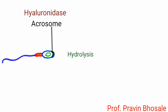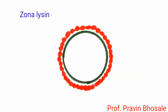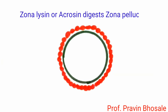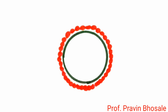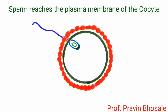Hyaluronidase enzyme of the acrosome hydrolyses the hyaluronic acid of the follicular cells. Zonalysin or acrosin digests the zona pellucida. Now the sperm reaches the plasma membrane of the oocyte.